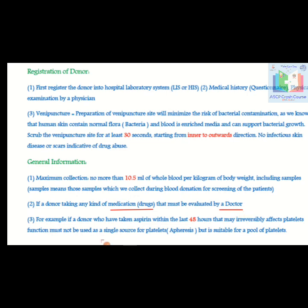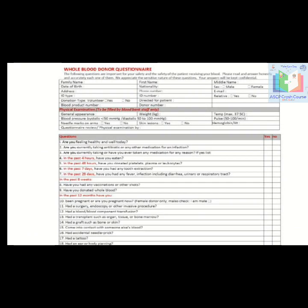For example, a donor who has taken aspirin within the last 48 hours — which may irreversibly affect platelet function — must not be used as a single source for platelet apheresis, but is suitable for a pooled platelets. This is a typical questionnaire form containing the patient's demographic details, email, contact number, and donation type.